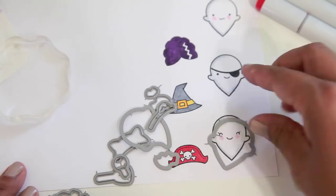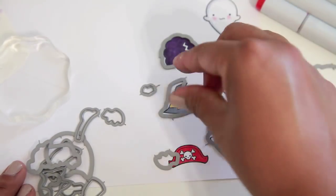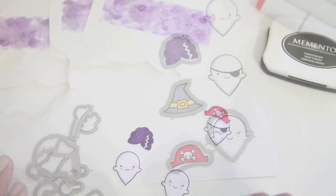Okay, now that the coloring is done, I'm just going to go ahead and locate the coordinating dies for each image and I'm going to go ahead and cut those out using my Cuddlebug off camera just to save some time.